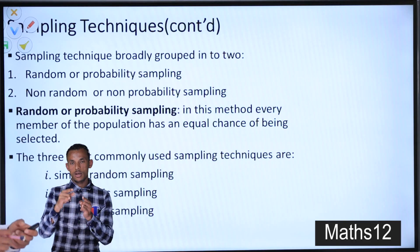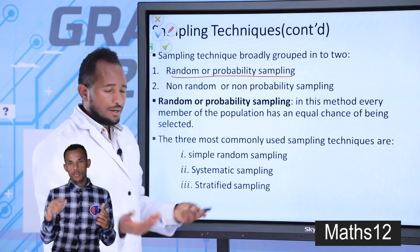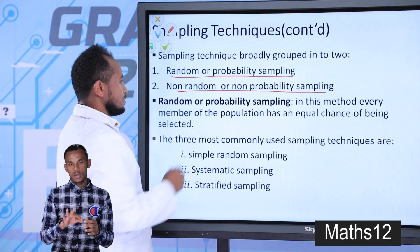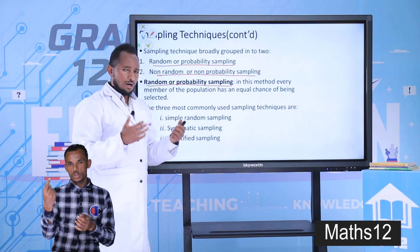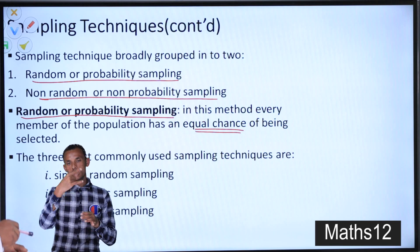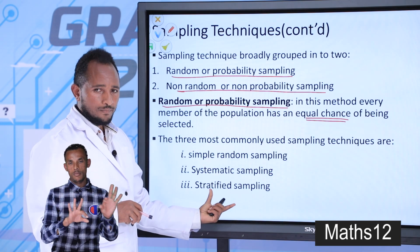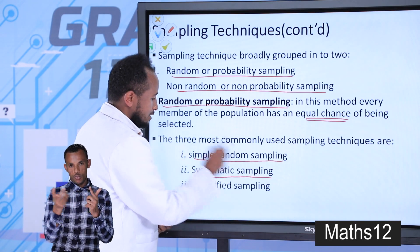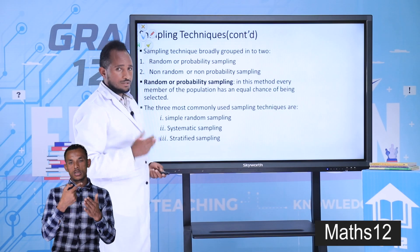Sampling techniques are broadly grouped into two: the first is random or probability sampling, and the second is non-random or non-probability sampling. In the case of random sampling, each or every member of the population has an equal chance of being a member of the sample. The three most commonly used probability sampling methods are: simple random sampling, systematic sampling, and stratified sampling.